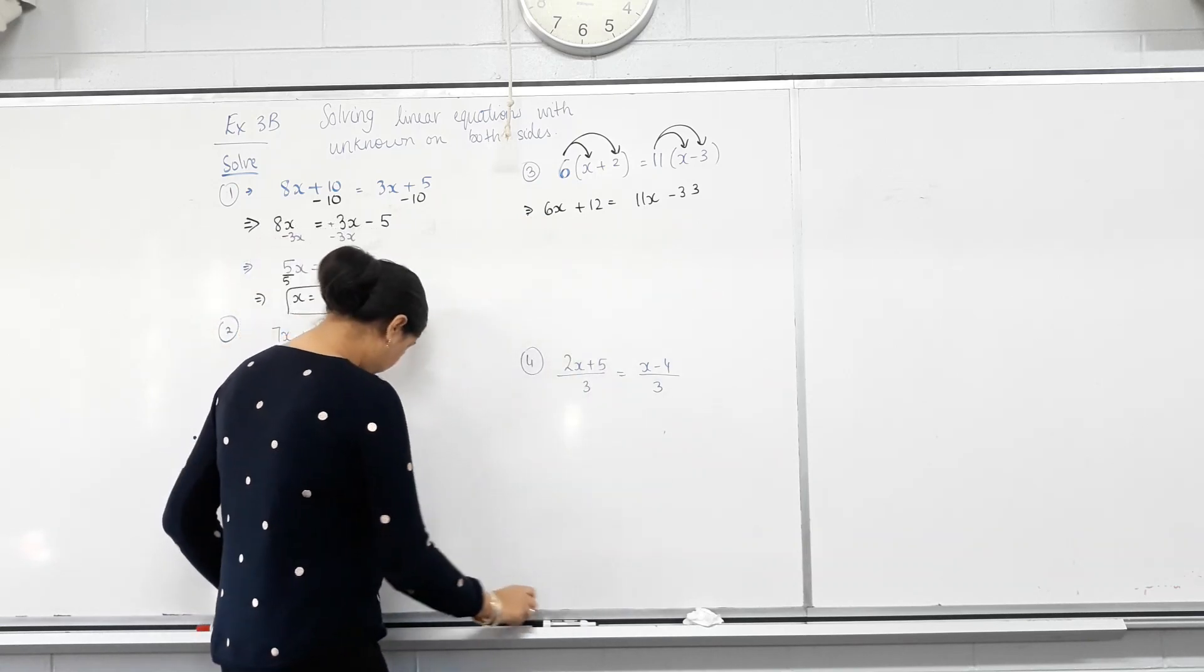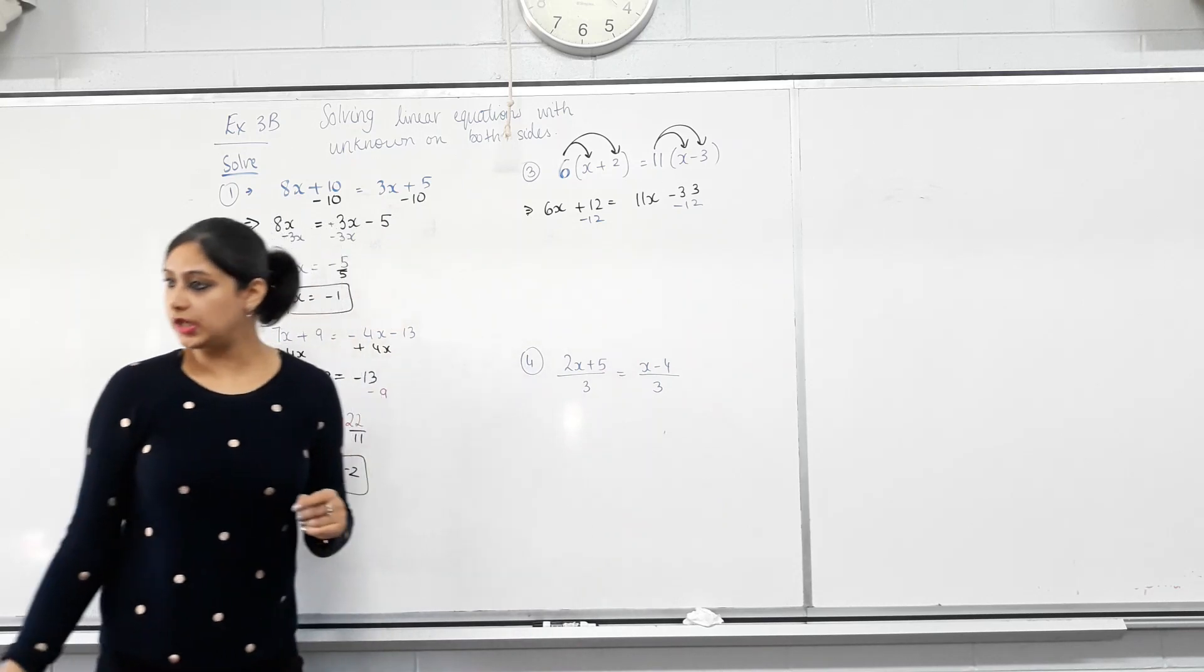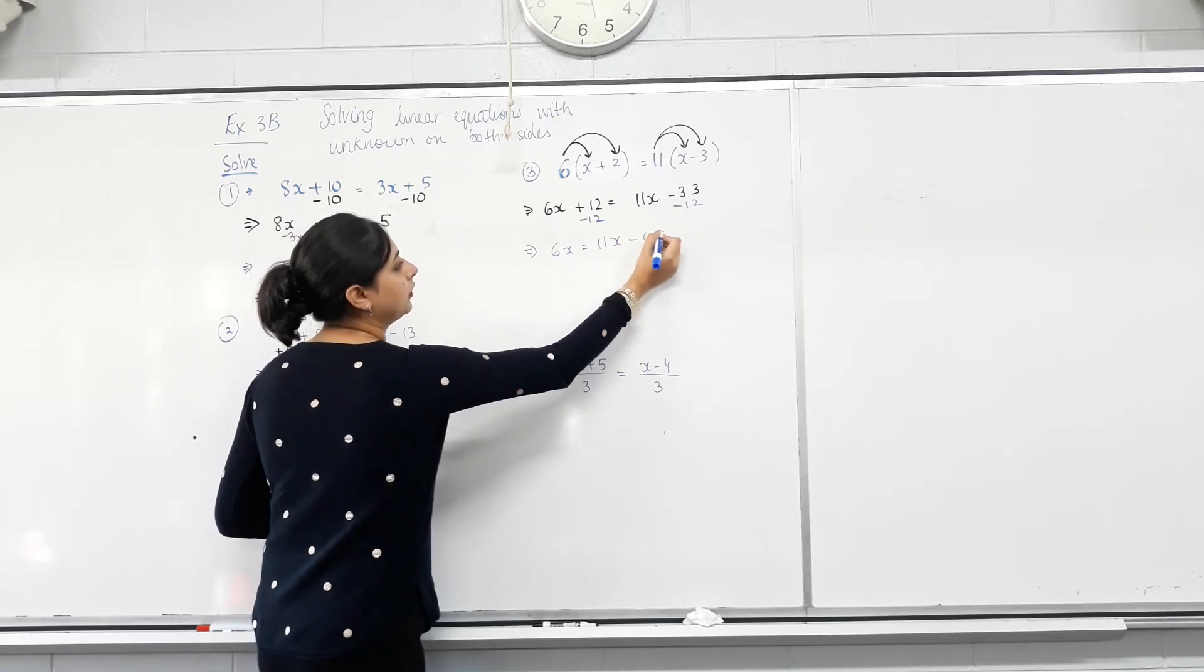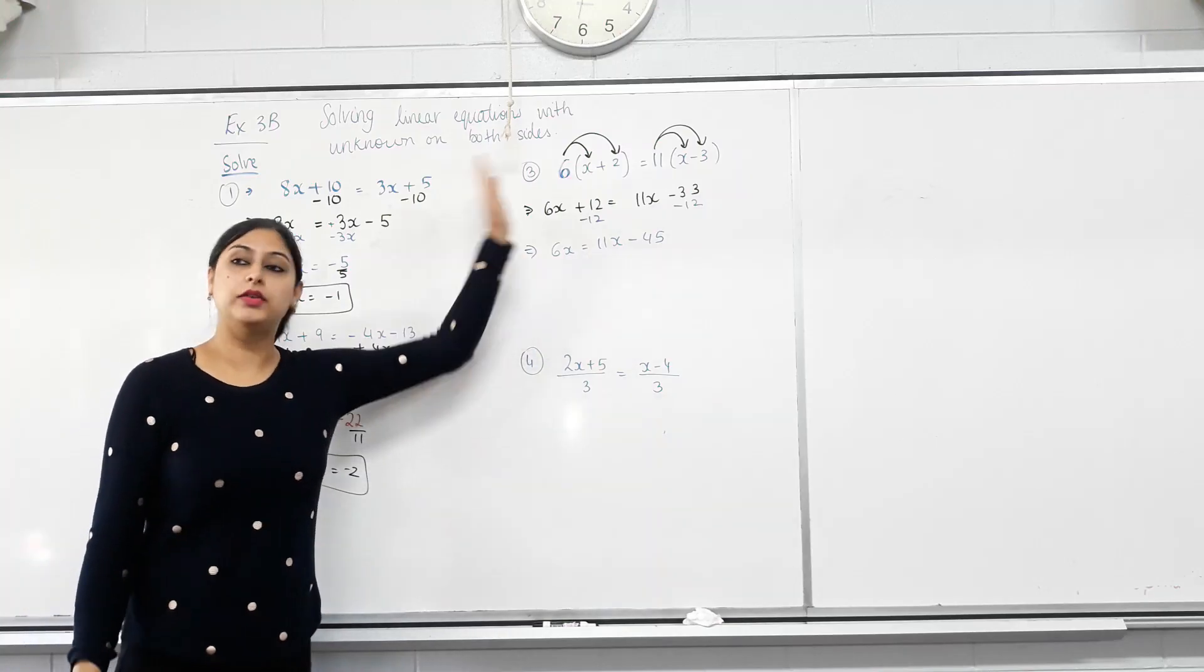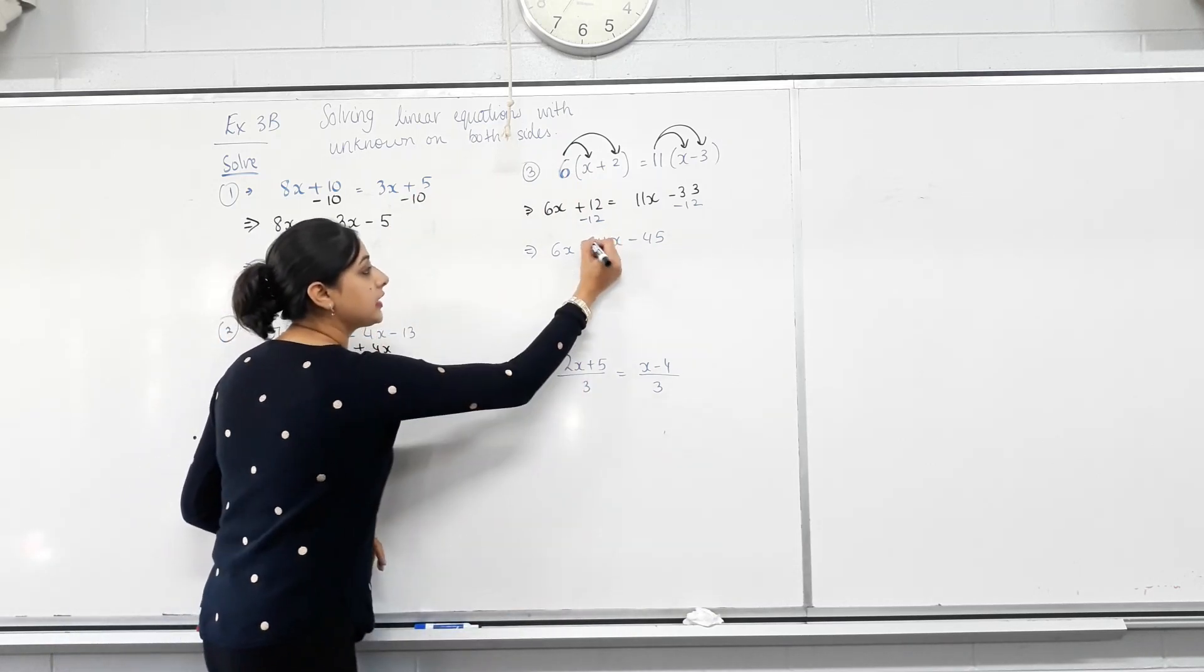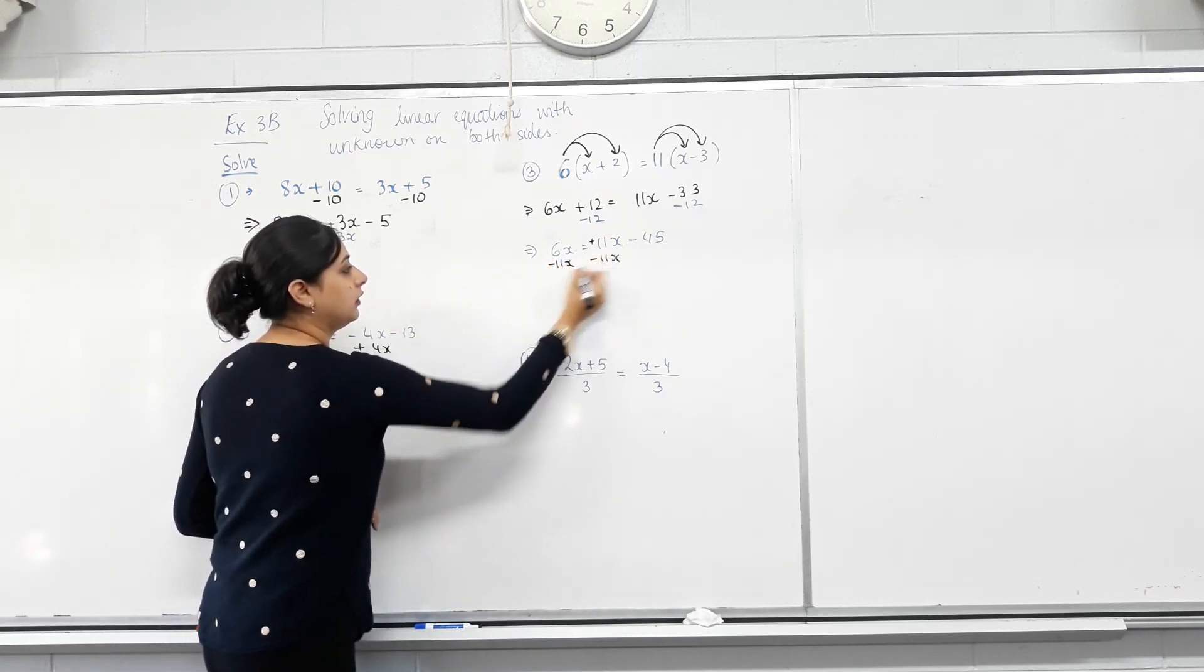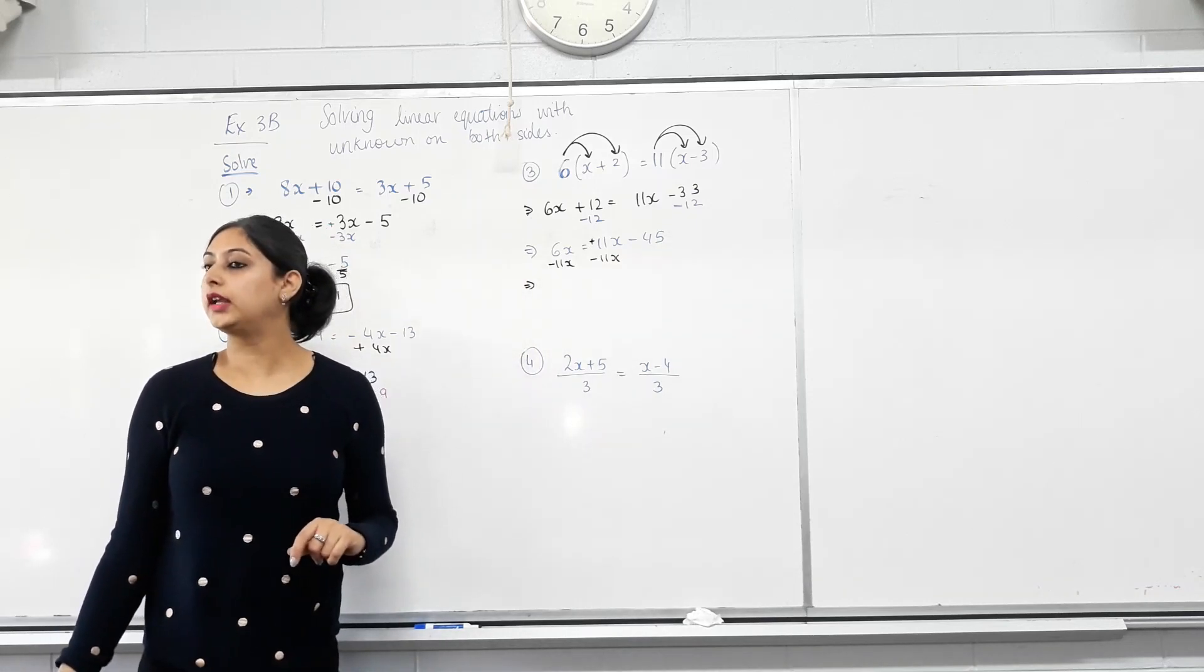Now, can I do minus 12 on both sides? Yes. So I get 6x equals 11x minus 21. Is that right? Yes. How do I move 11x to the other side? Minus. It's plus 11x here. Opposite of plus 11x. Minus 11x. Minus. What 6x takes away 11x? Negative 5x.